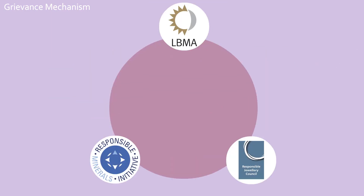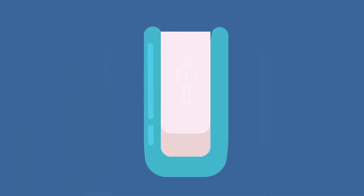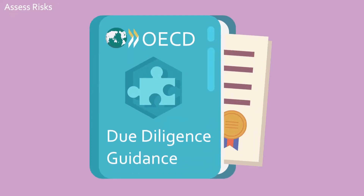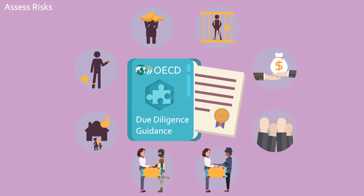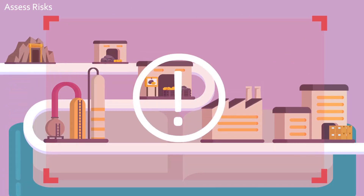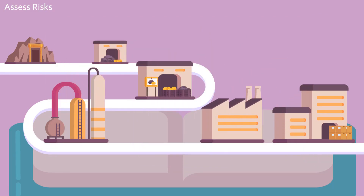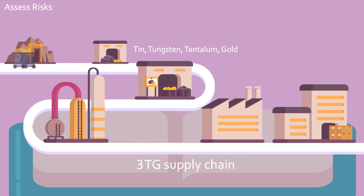RMI worked with the LBMA and RJC to develop an online cross-industry platform to screen and address grievances linked to smelters and refiners. Now that you have a policy defining the risks to be managed, the OECD Guidance calls for you to identify and assess those risks in your own supply chain. Our examples here follow a typical 3TG supply chain, but the concepts apply to all material supply chains.